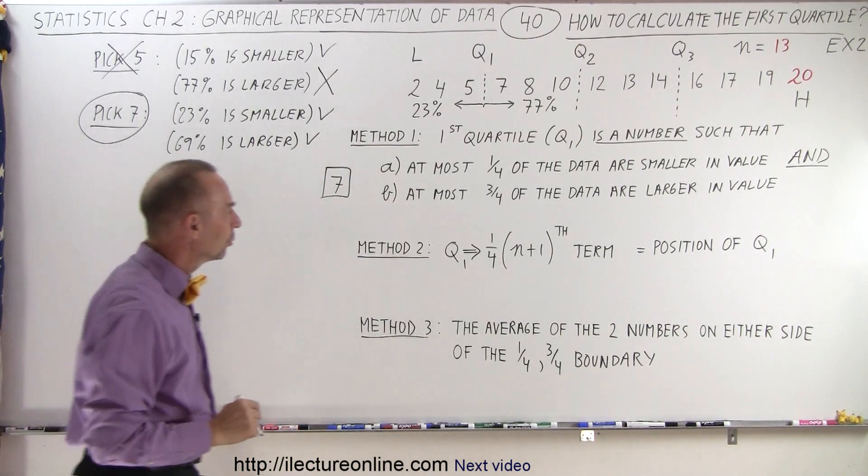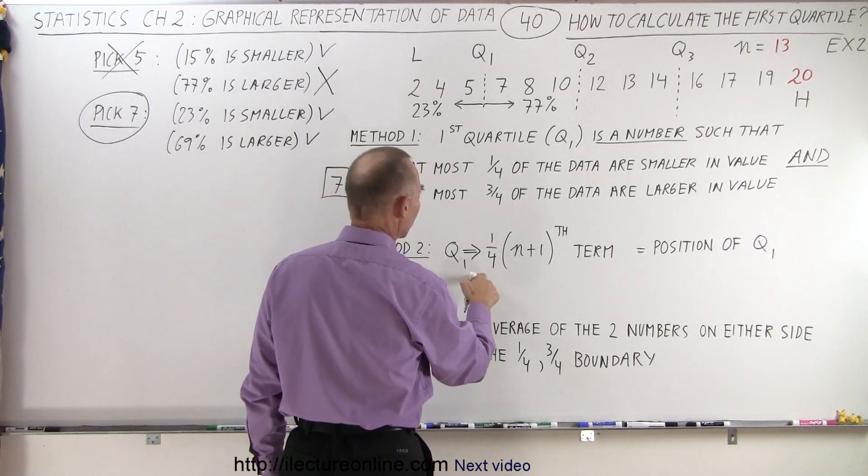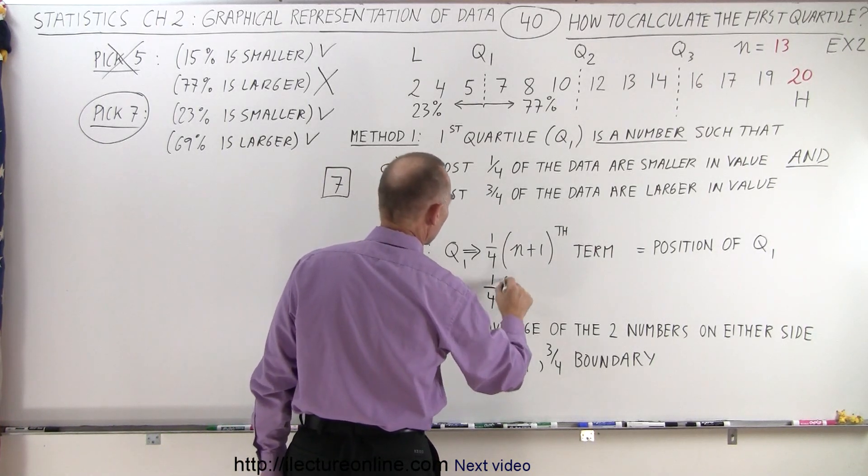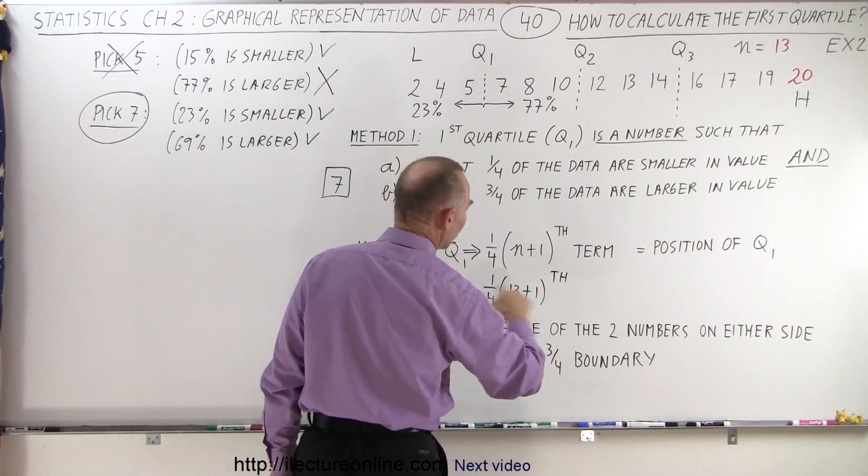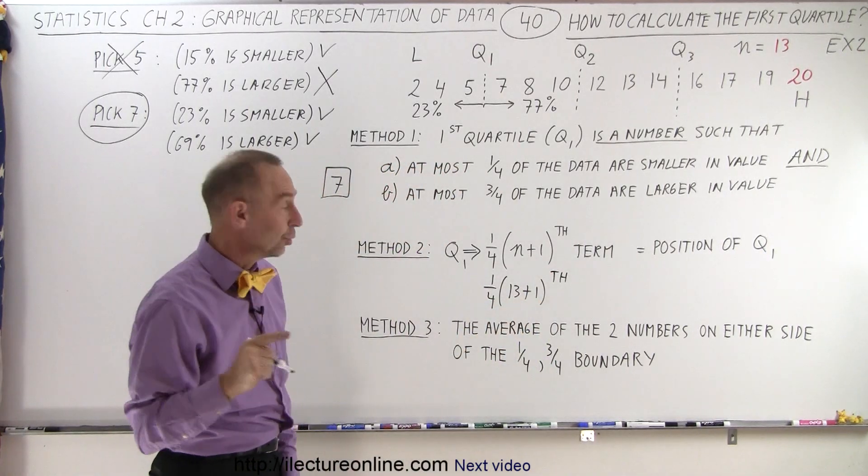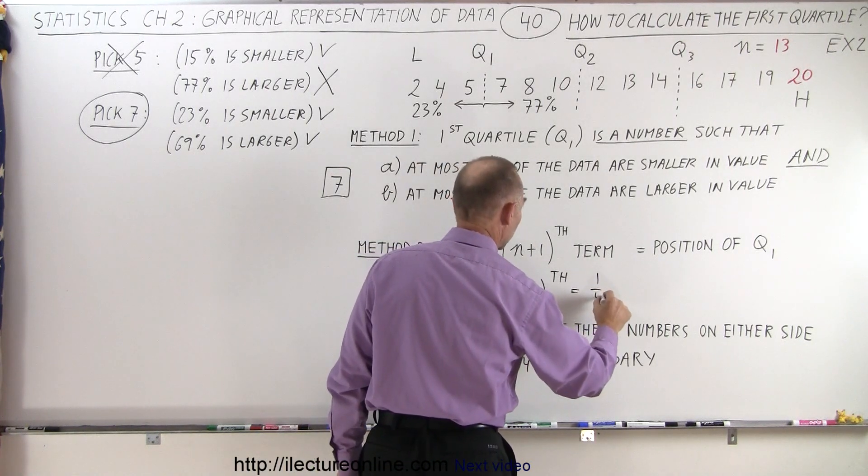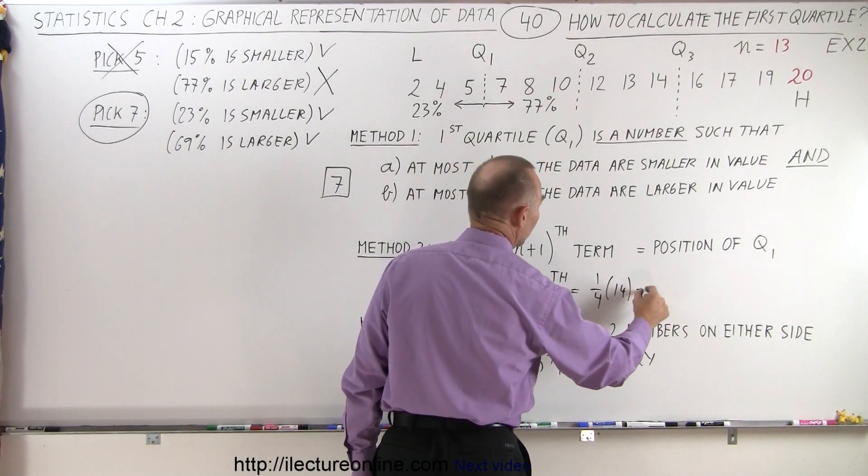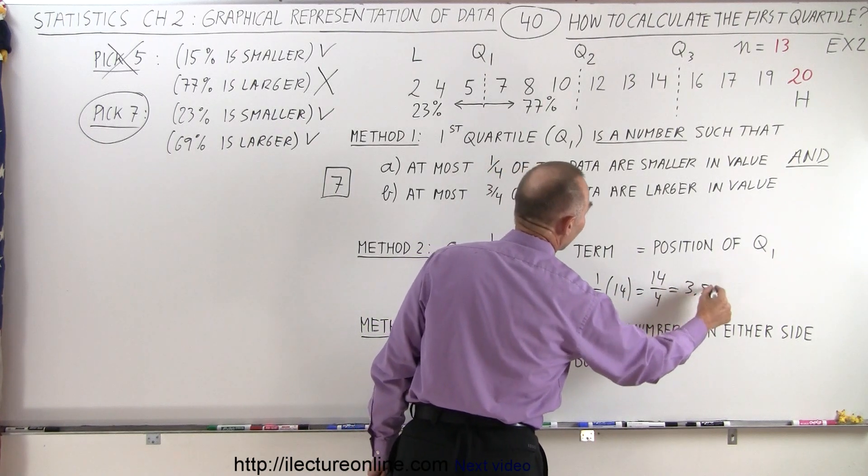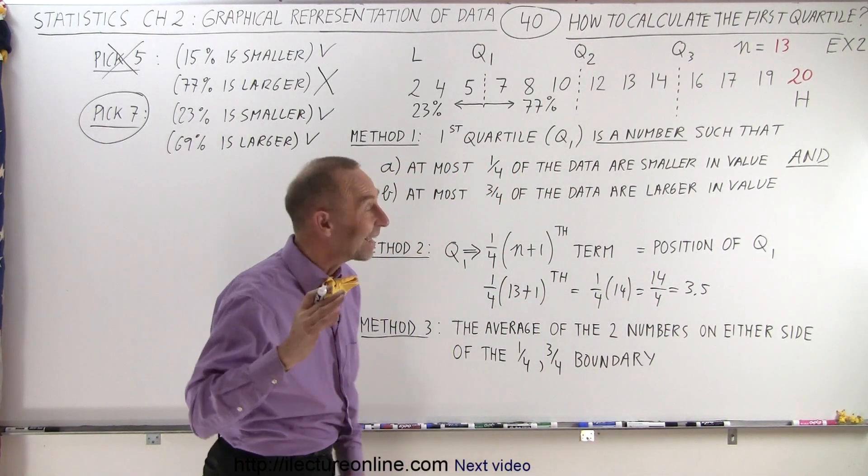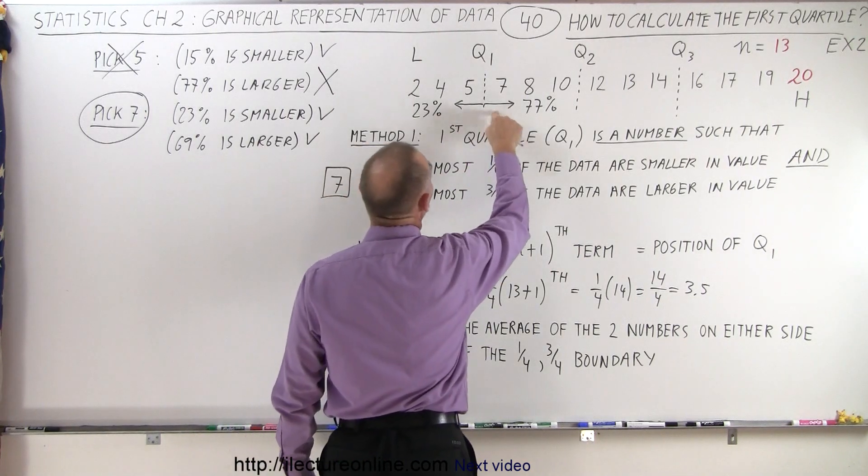How about method 2? We're going to take one quarter times the number of data points, which is 13, plus 1, and that would be the position of the Q1, quartile one. So this would be equal to one quarter of 14, which is 14 divided by 4, which is 3.5. Wow, it's exactly halfway between the third and the fourth point.